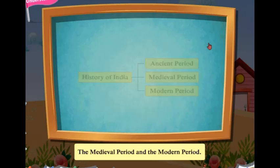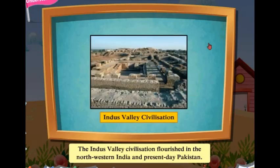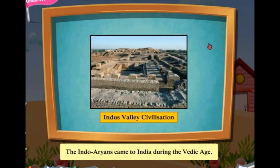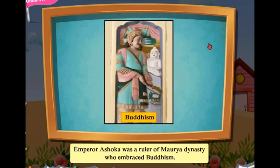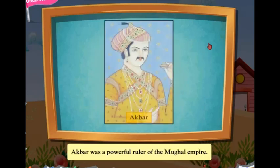The Indus Valley civilization flourished in northwestern India and present-day Pakistan. The Indo-Aryans came to India during the Vedic age. Emperor Ashoka was a ruler of the Maurya dynasty who embraced Buddhism. Akbar was a powerful ruler of the Mughal Empire.